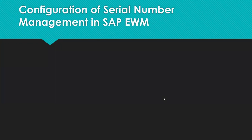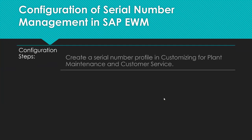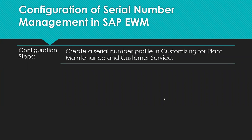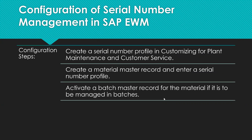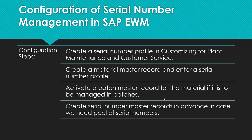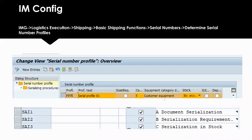For configuration, you create the serial number profile in customizing under Plant Maintenance and Customer Service, create the material master record and enter the serial number profile, and activate batch management for the material if it is to be managed in batches. You can also create serial number master records in advance if a pool of serial numbers is needed.